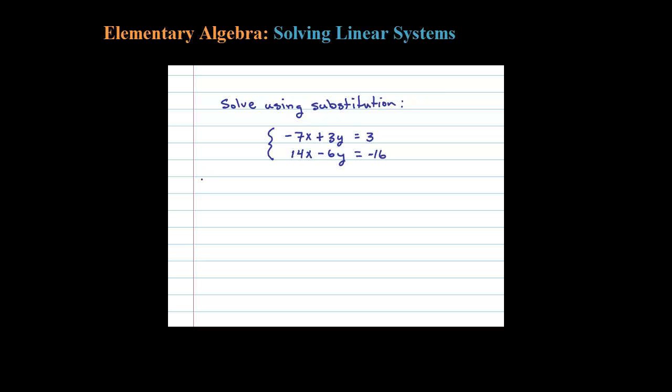Here I'm asked to solve this system by substitution. The first step is to isolate one of the variables, so let's take the first equation and isolate the y. I'll do that first by adding 7x, which leaves me with 3y equals 7x plus 3.